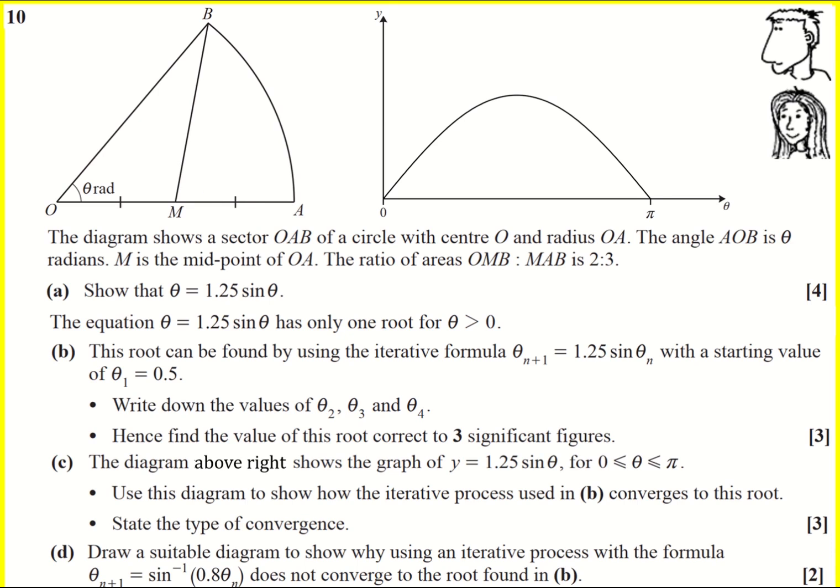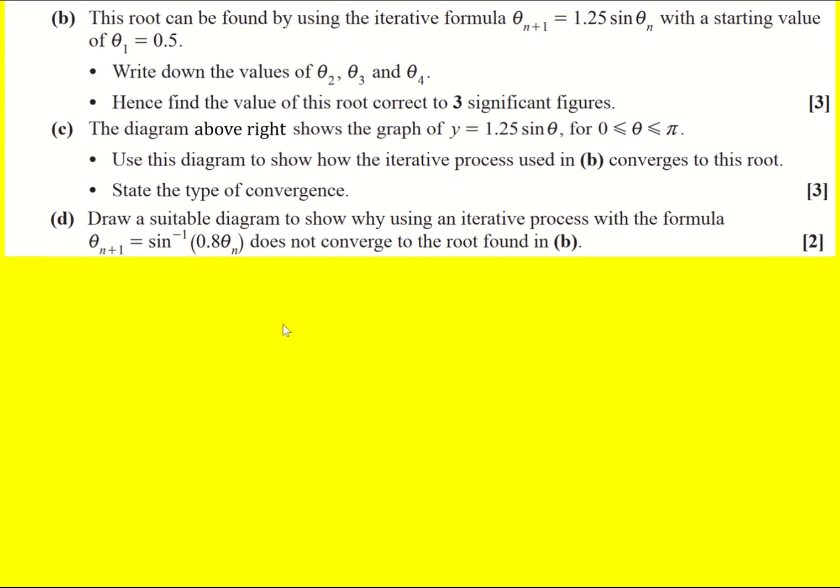So we've got this diagram on the left and we're told that the ratio of areas OMB (that's the triangle) to MAB (that's the remaining part when we subtract the triangle from the sector) is 2 to 3, and we have to try and get to this formula.